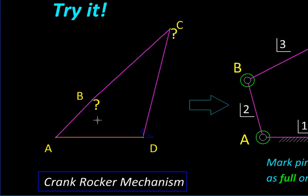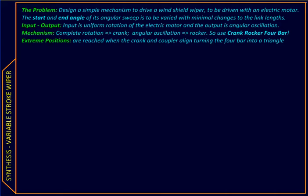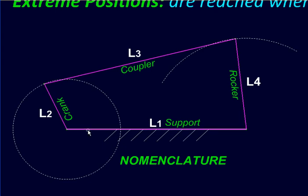So we have chosen a basic crank rocker mechanism, so it will have a support, then a crank, a coupler, and a rocker, and the lengths we will call as L1, L2, L3, and L4.